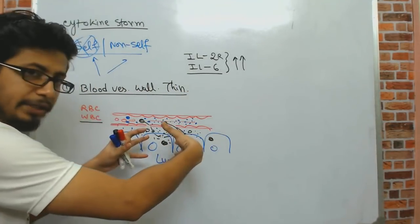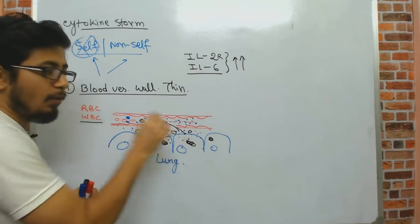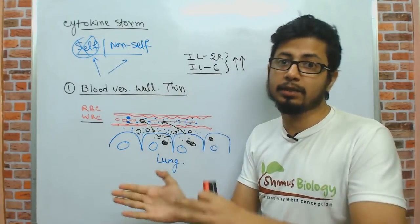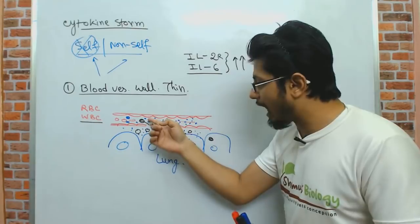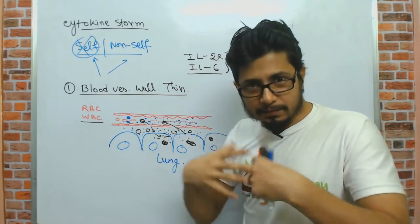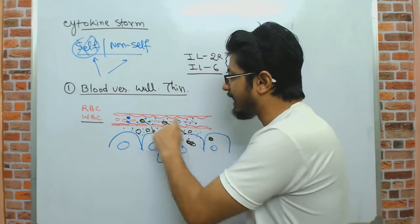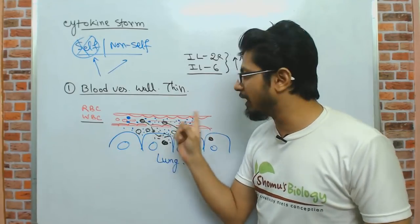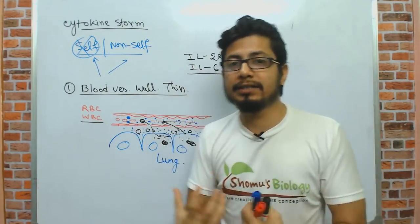The cytokines signal more and more white blood cells to rush in, causing the area to swell up. As more cytokines move through, the blood vessel wall becomes thinner and thinner. Blood is composed of a cellular component — red blood cells, white blood cells, platelets — and a liquid component. As the wall becomes more permeable, the liquid component moves out of the blood vessel into the neighboring lung tissue.